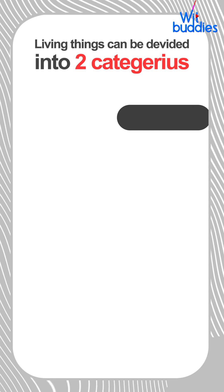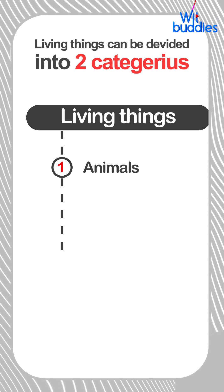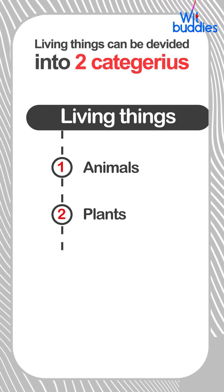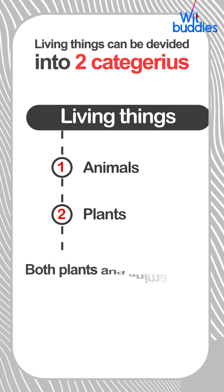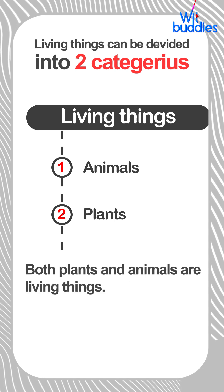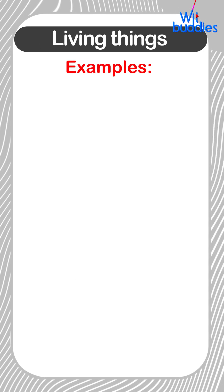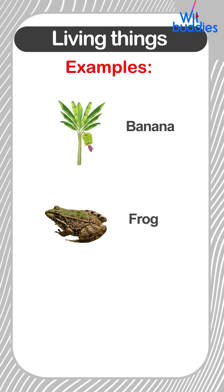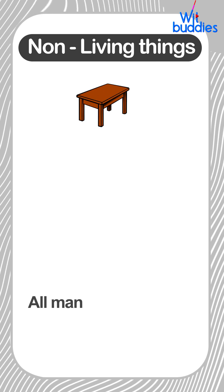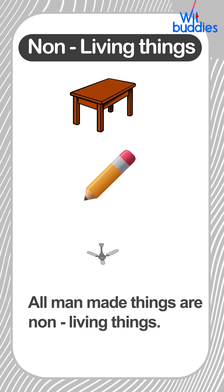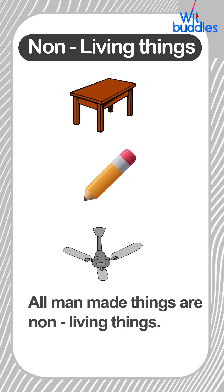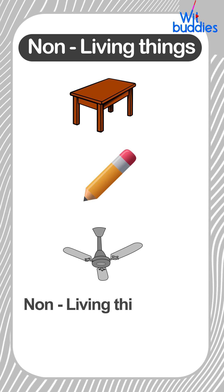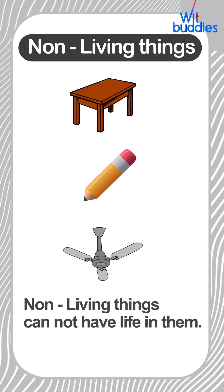Living things can be divided into two categories: animals and plants. Both plants and animals are living things. Examples include banana tree, frog, and butterfly. Non-living things: all man-made things are non-living things. Non-living things do not have life in them.